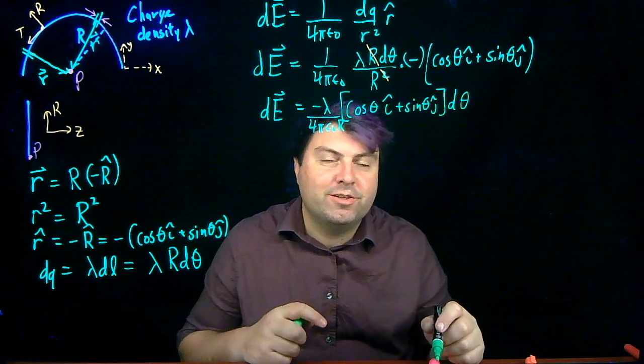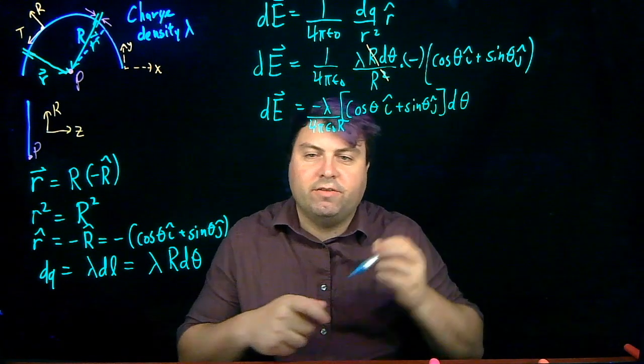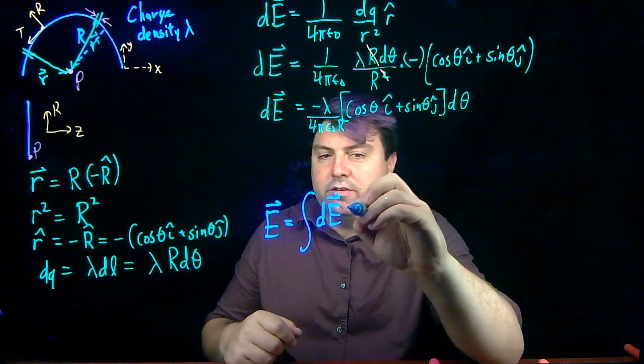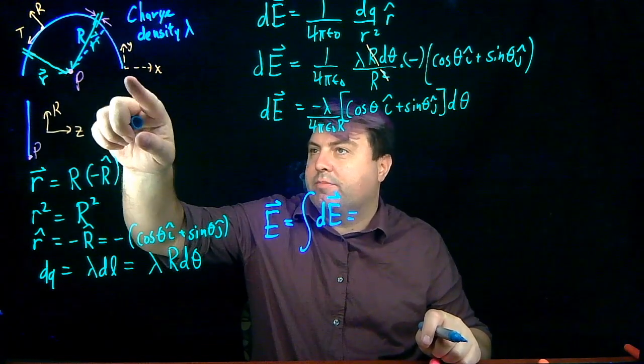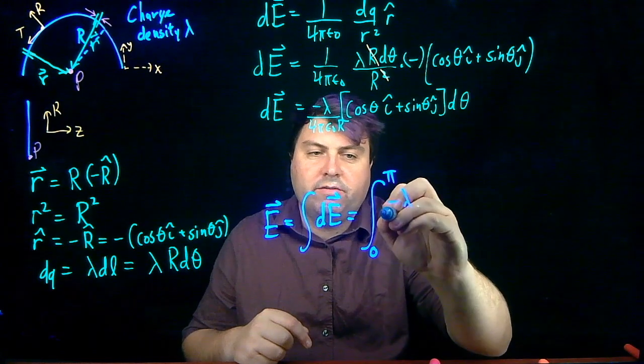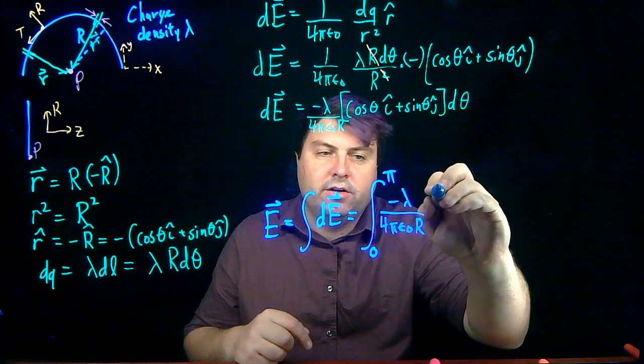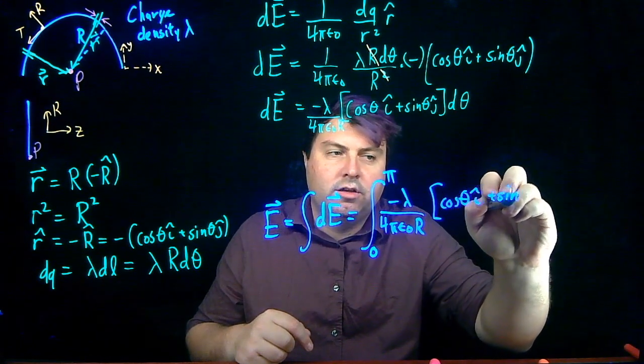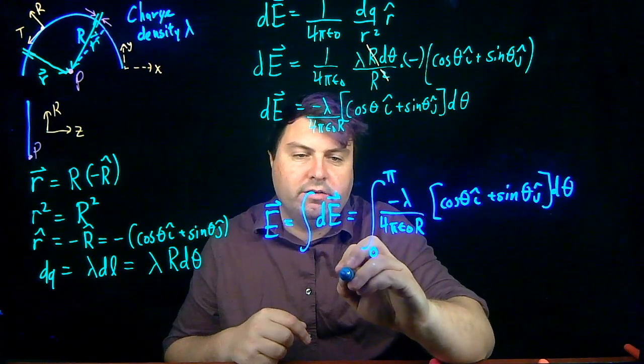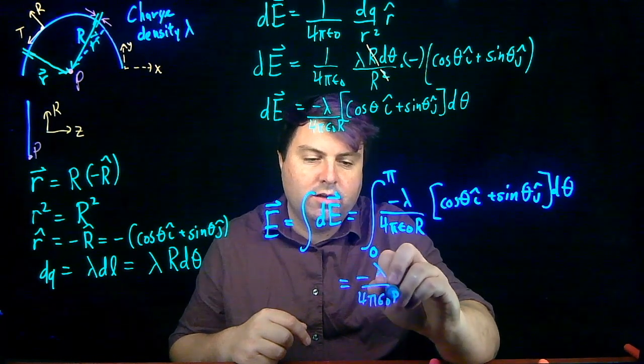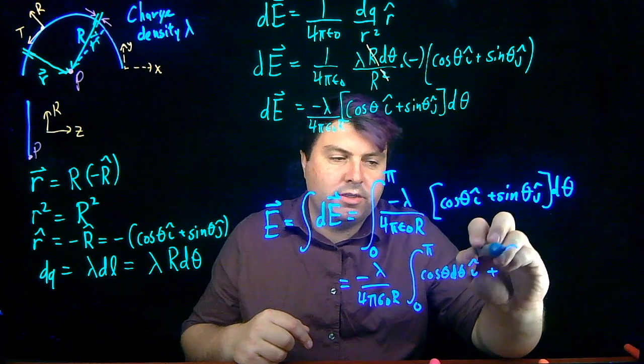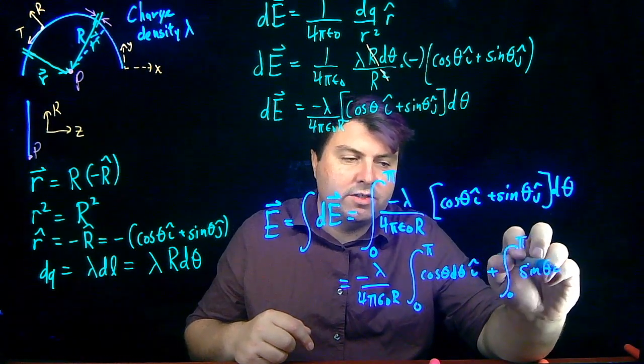So I know already what my integral is going to be over. And lastly, I have that my E, my electric field, is going to be the integral of dE. And since I'm integrating over angle, I just need to figure out what angle I start at and what angle I end at. Well, I'm starting at 0 and I'm ending at 180. So in radians, I'm going to go from 0 to π. I have my constant term right here, negative lambda over 4π epsilon naught r. And then I have all of this left, cosine θ i hat plus sine θ j hat dθ. So all of this I can take out of the integral, and I can look just at the integrands of these. So I have negative lambda over 4π epsilon naught r. And then I have the integral from 0 to π of cosine θ dθ i hat plus the integral from 0 to π of sine θ dθ j hat.